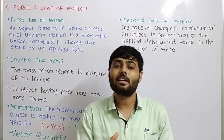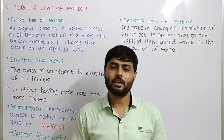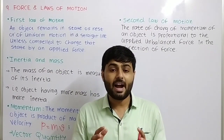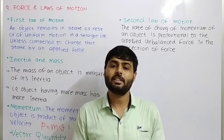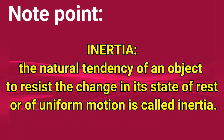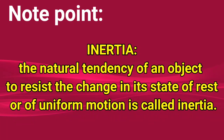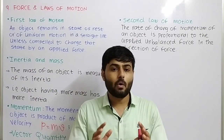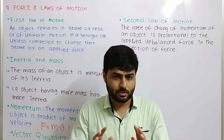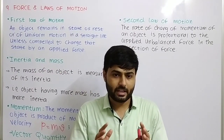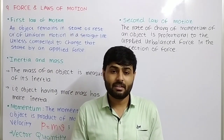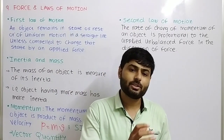I hope now you understood what inertia is. Inertia is a tendency of an object by which the object tries to oppose any change in its motion. If the object is at rest, it wants to remain at rest. If the object is in motion, it wants to continue its motion and resist any kind of change in motion. That is inertia. Our first law of motion given by Sir Isaac Newton is also based on this inertia.